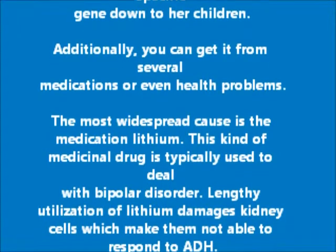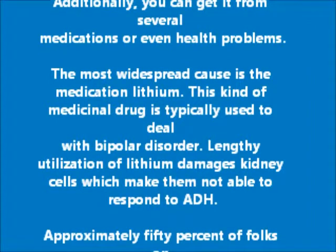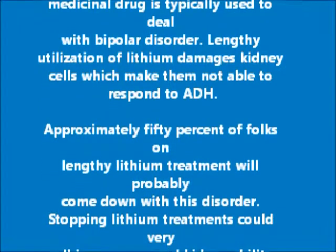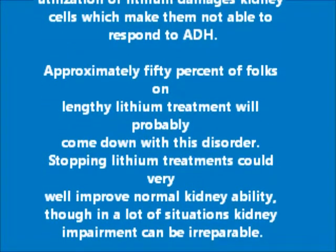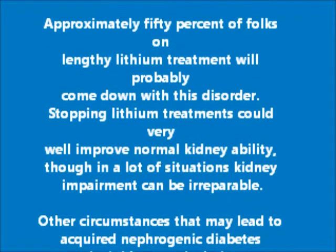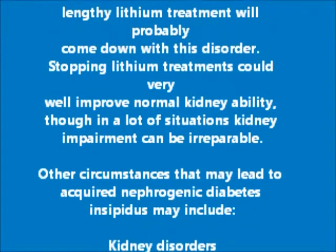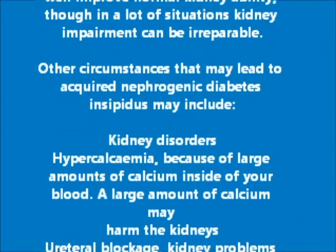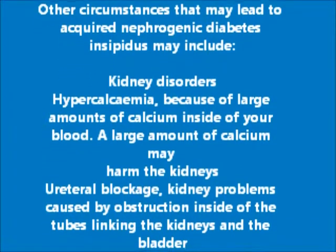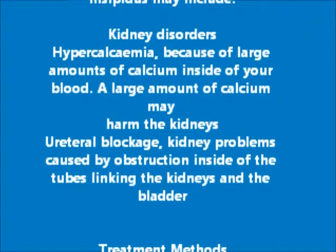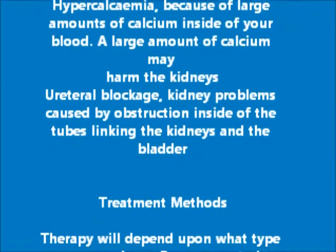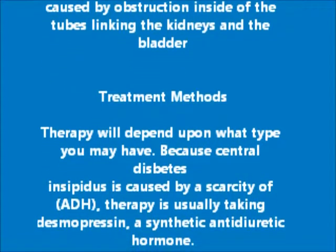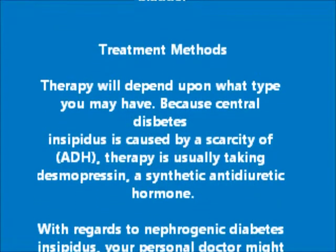You can also get nephrogenic diabetes insipidus from several medications or health problems. The most widespread cause is the medication lithium, typically used to treat bipolar disorder. Lengthy use of lithium damages kidney cells, making them unable to respond to ADH; approximately 50% of folks on lengthy lithium treatment will probably develop this condition. Other causes include kidney disorders, hypercalcemia due to large amounts of calcium in the blood, and urethral blockage causing kidney problems from obstruction in the tubes linking the kidneys to the bladder.